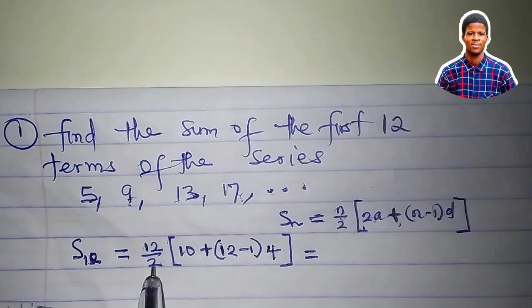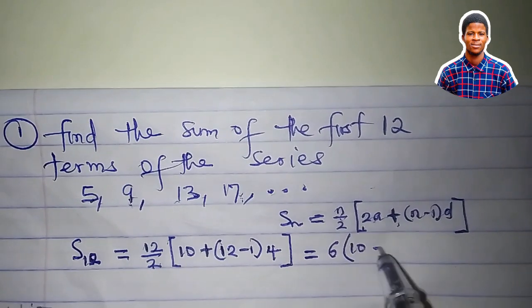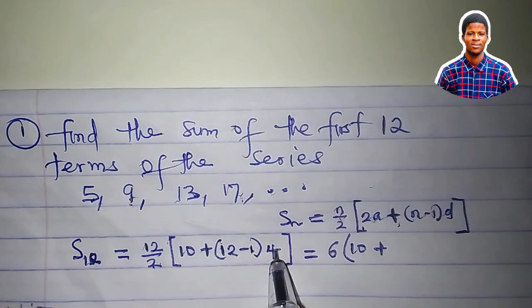12 over 2 is 6. This is 10. Plus 12 minus 1 is 11. 11 times 4 is 44.